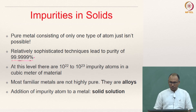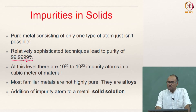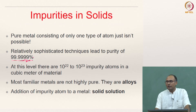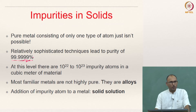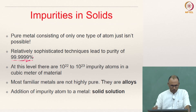At the 99.9999% purity level, you can still have impurity atoms on the order of 10²² to 10²³ per cubic meter of material. In several engineering applications, most metals are not pure metals — they are alloys. For instance, steel is an alloy of iron and carbon. Even gold ornaments are not made of pure gold; other materials are added by the goldsmith.